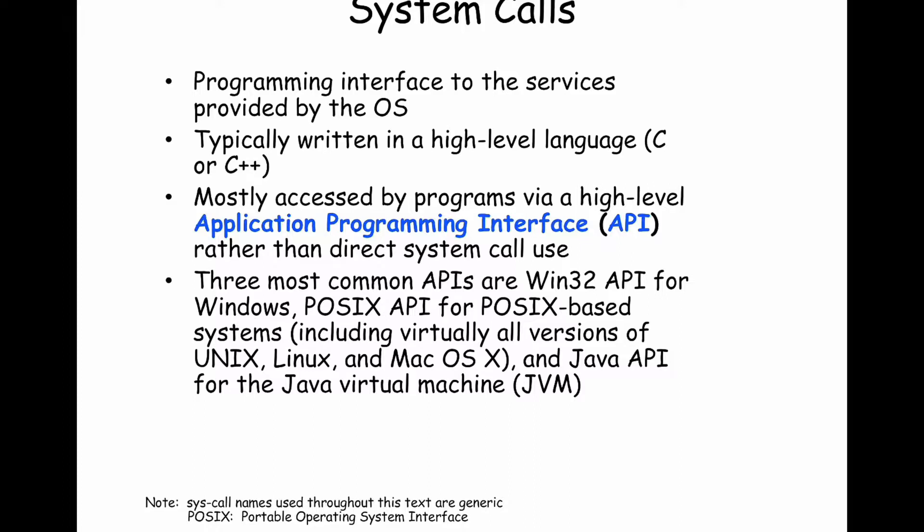System calls often come in what are called language bindings. There are libraries of functions available in different languages — usually fairly low-level systems languages like C and C++. Java has some bindings but isn't really a systems language per se, because the whole purpose of Java was to make programs portable from one physical computer architecture to the next. Language bindings offer APIs that gloss over some of the details of system calls to make it a little bit easier to write your programs.